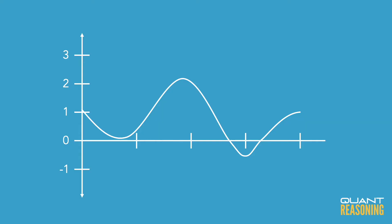All right, so I'm scanning this graph and it looks like the highest point is 2.2 and the lowest point is negative 0.5.